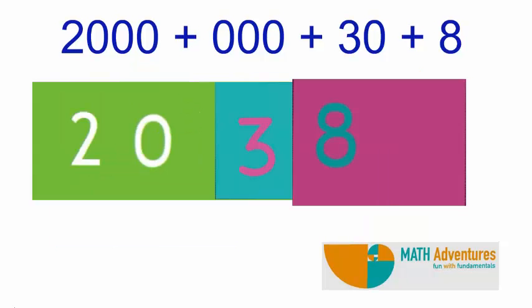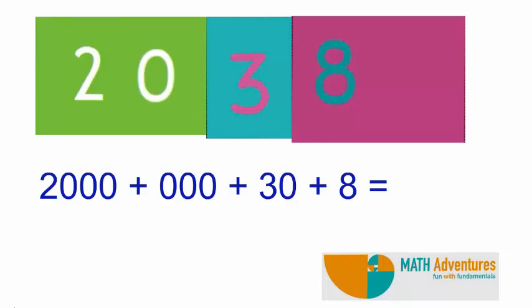Now place the blue card on the green card and the pink card on the blue card such that their right edges match. What number do you see? Is it not 2,038? So can we say 2,000 plus 0 plus 30 plus 8 is nothing but 2,038? Look here in the hundreds place. We have the digit 0.